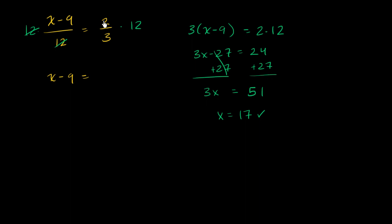And on your right-hand side, 2 thirds times 12. Well, 2 thirds of 12 is just 8. And you could do the actual multiplication: 2 thirds times 12 over 1. 12 divided by 3 is 4, 3 divided by 3 is 1. So it becomes 2 times 4 over 1, which is just 8. And then you add 9 to both sides.